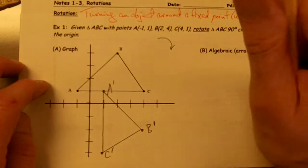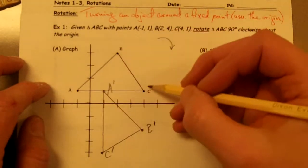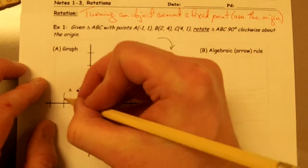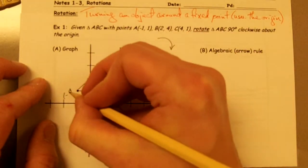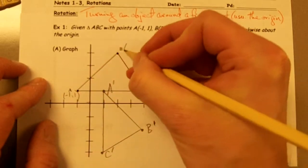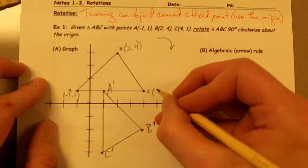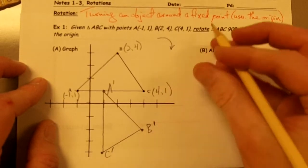Now I want to go ahead and write in my coordinates for my original points A, B, and C, and also for my rotated points. So my coordinates for point A: A is (-1, 1), B is (2, 4), C is (4, 1). I was given those points.